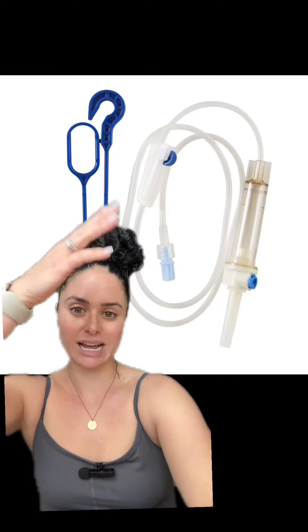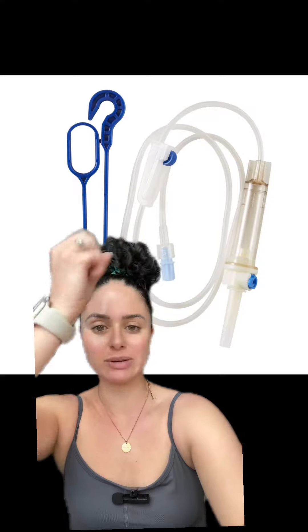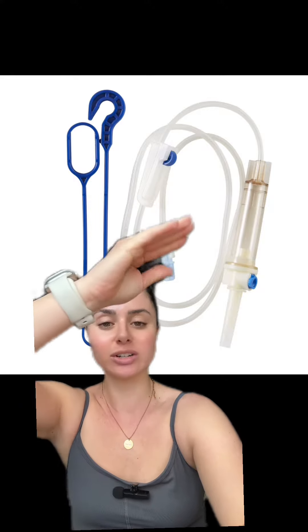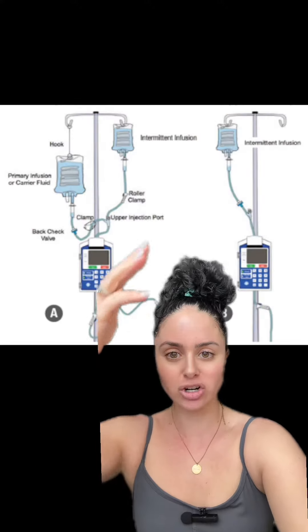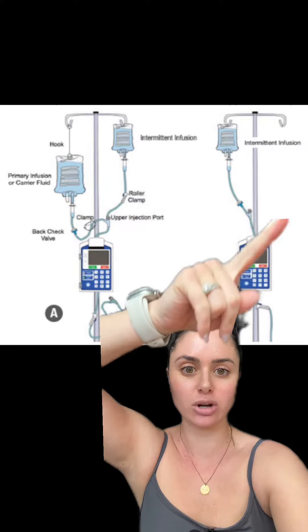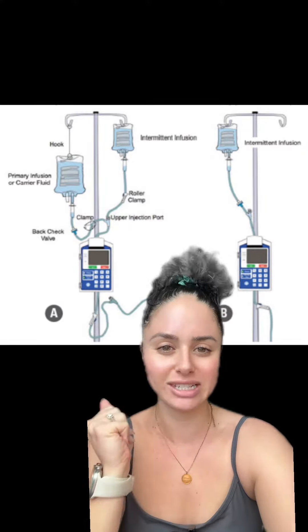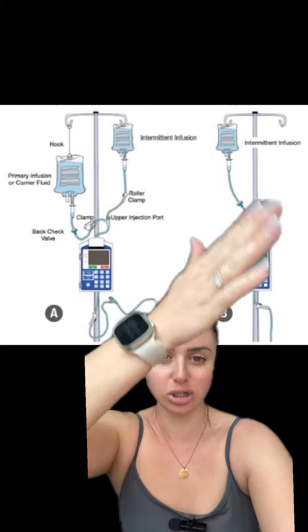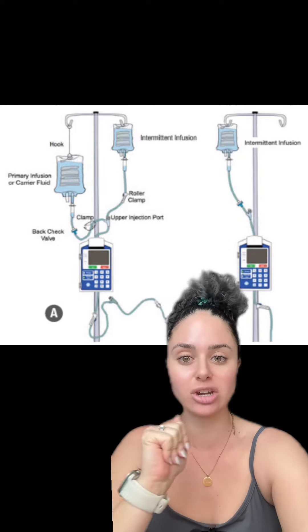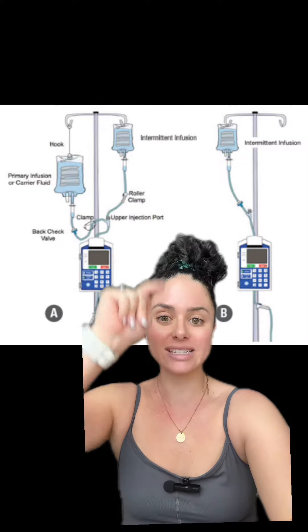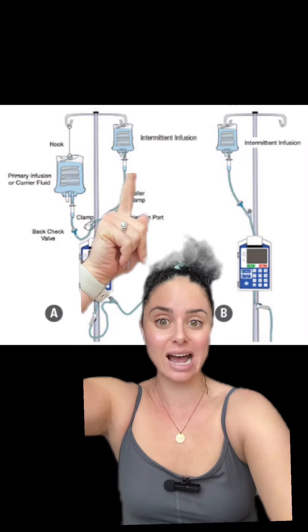Here's an example of some secondary tubing. When you grab a secondary set, it comes with a little hook so you can hang your primary bag lower, and the secondary set of tubing is shorter to connect to the primary. So here would be your continuous infusion — let's pretend this is your primary infusion connected to the patient — and this would be a primary infusion with a secondary. The secondary again is higher.